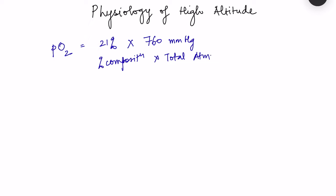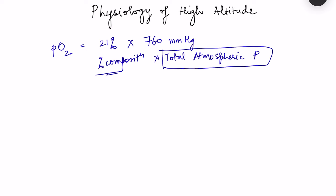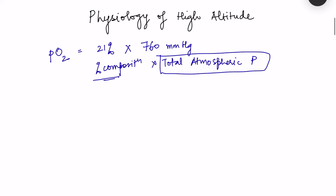As we ascend to high altitude, there is a decline in the total atmospheric pressure. The percentage composition of the gas remains the same — remember this. This percentage of oxygen which we inhale is also known as FiO2, the fraction of inspired oxygen, which is 21% or 0.21 in fractional form.